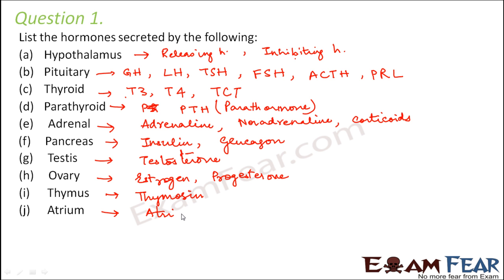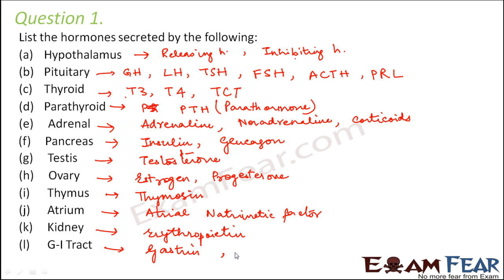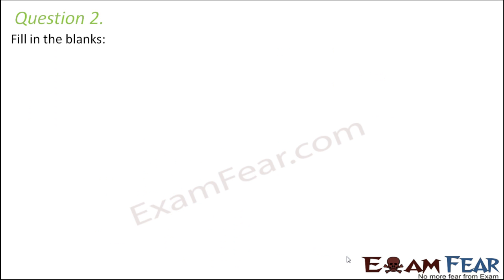The atrium releases the atrial natriuretic factor, also known as ANF. The kidney secretes erythropoietin. The gastrointestinal tract secretes many hormones such as gastrin, secretin, and CCK — that is cholecystokinin. These are some of the hormones secreted by the gastrointestinal tract.